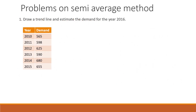Problems on semi-average method. First problem: draw a trend line and estimate the demand for the year 2016. So we have to draw a trend line and predict the value for 2016. The demand values are given for six years, from 2010 to 2015. In the semi-average method, first we divide the series into two equal parts — six years means two equal parts of three years each.